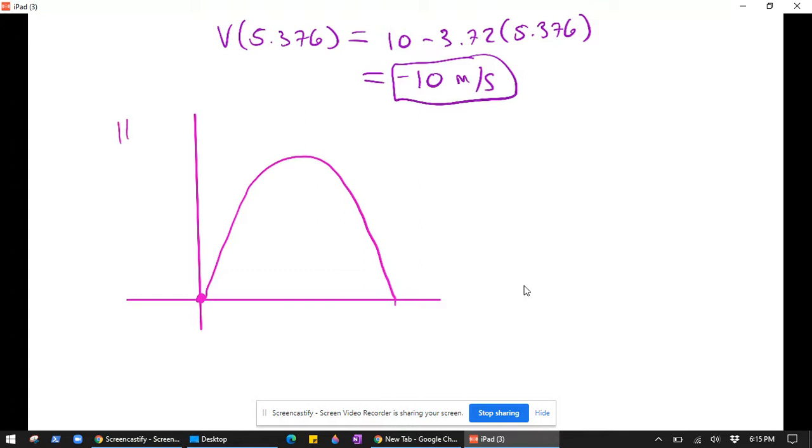So this is our height. We found this time to be 5.376. This is t. So if it was launched initially at 10 meters per second, that's telling you the slope right at that moment. The slope here is 10 meters per second.